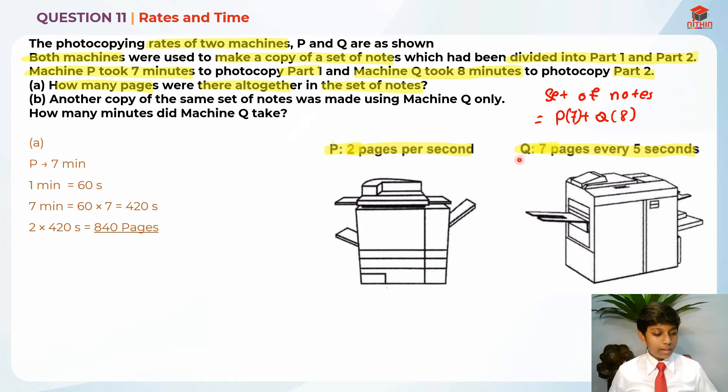After that, we can move on to finding Q. Basically, we found P for 7 minutes, after that we must find Q for 8 minutes. So Q took 8 minutes to print part 2. And we know 8 minutes is equal to 60 seconds times 8 which is 480 seconds. I'm going to take this 480 seconds divided by 5 first because that is every 5 seconds.